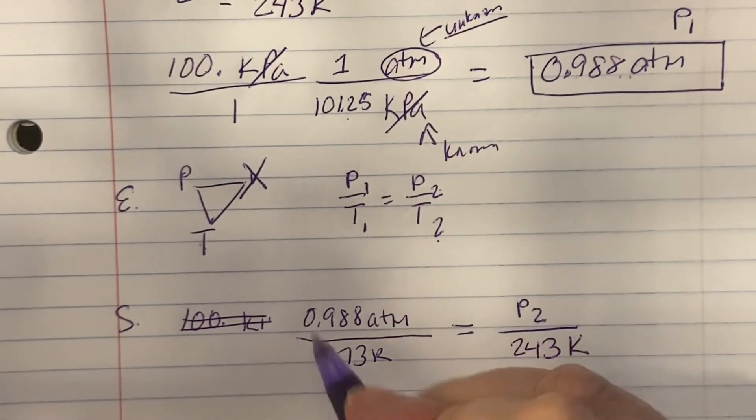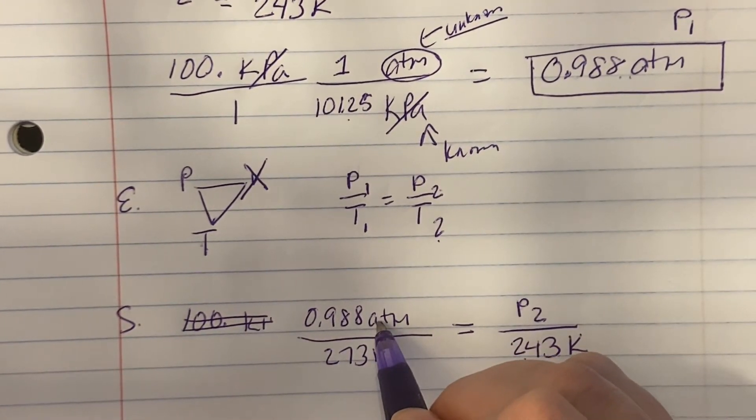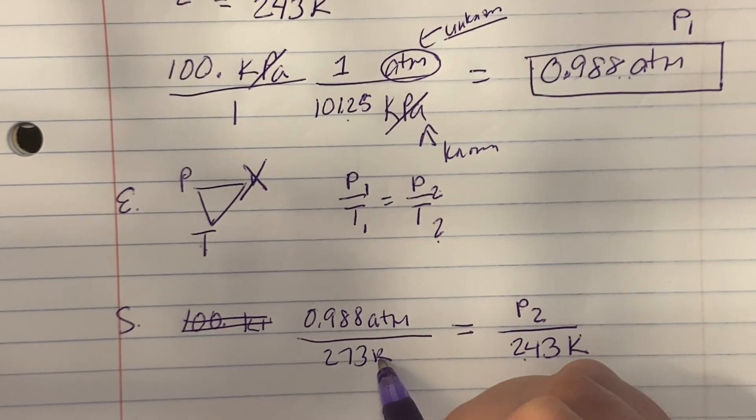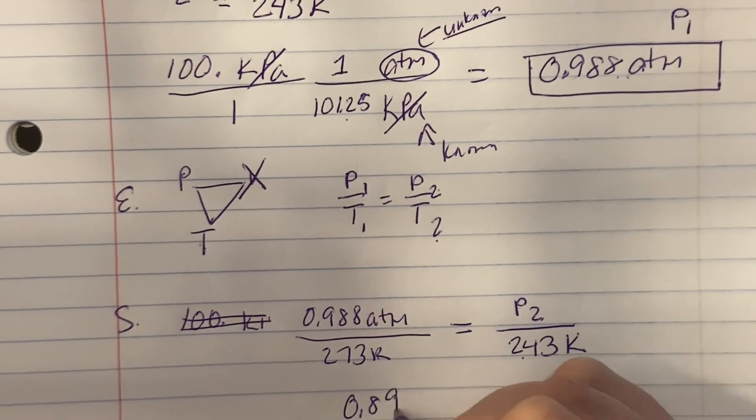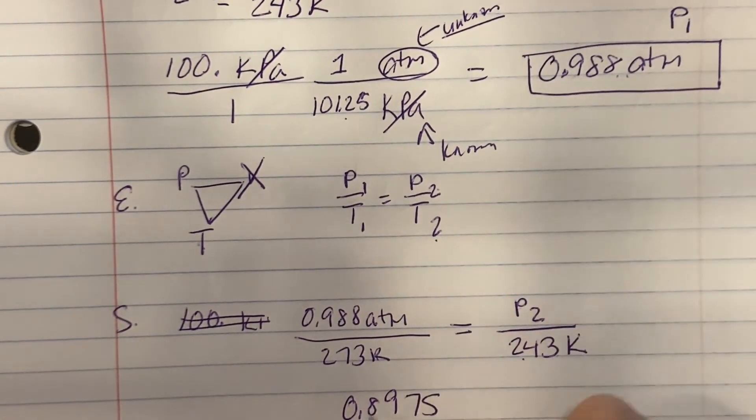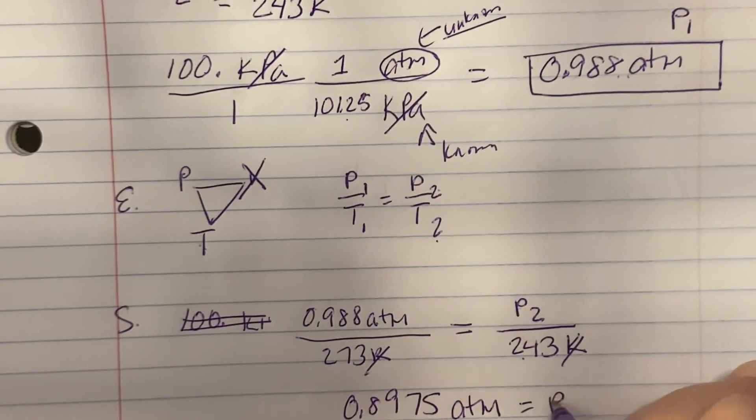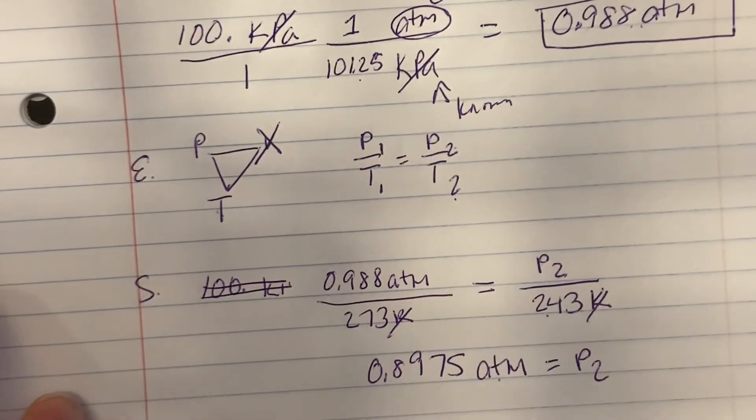Now cross-multiply and divide. So 248 times 0.988 divided by 273. And that is going to give me 0.8975. My Kelvin is going to cancel, so I'm just going to have atmospheres.